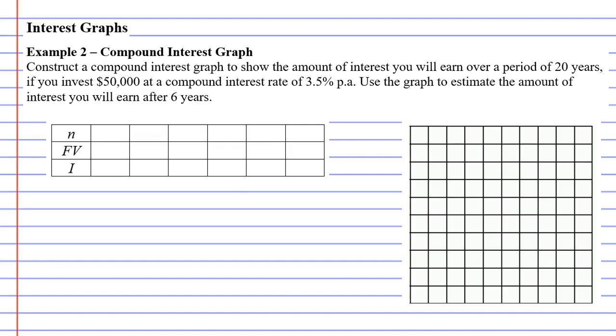Construct a compound interest graph to show the amount of interest you will earn over a period of 20 years. We're investing $50,000 at a compound interest rate of 3.5% per annum. Use the graph to estimate the amount of interest you will earn after six years.